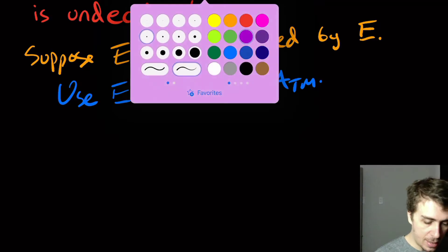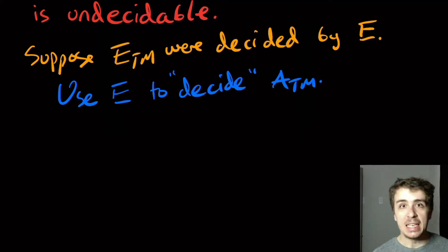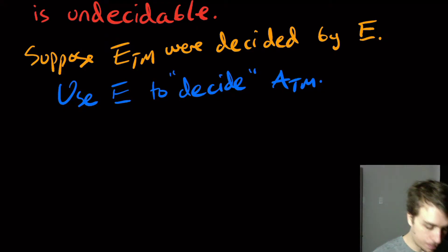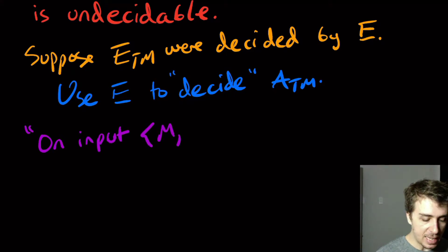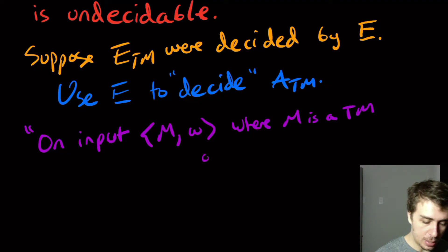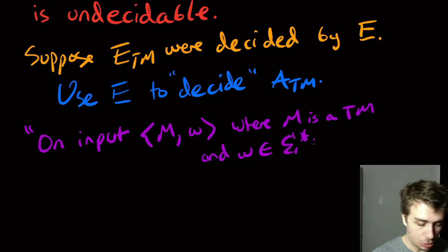So remember that if we are to decide ATM, we need to be able to answer the question machine M and input W and answer whether or not that machine accepts W. So we're going to try to decide ATM right here. And remember that the ATM, any machine for ATM must take those two inputs where M is a Turing machine, and W is some string, let's say some string in sigma star.